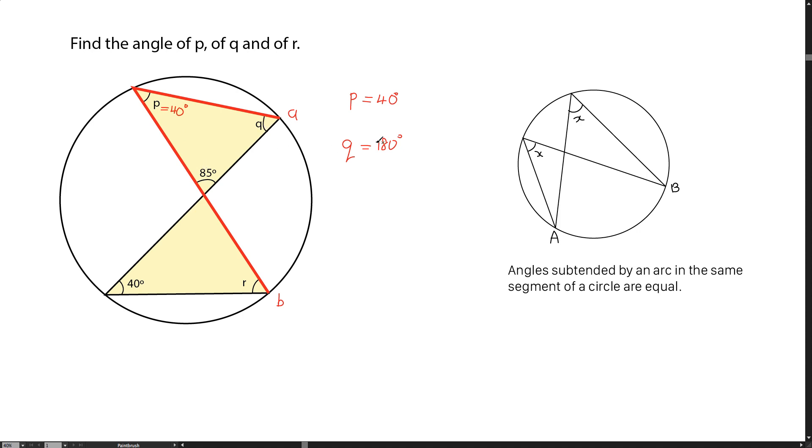Q is 180 take away 40 degrees and take away 85 degrees. That's the remaining angle for Q. So Q is 55 degrees.